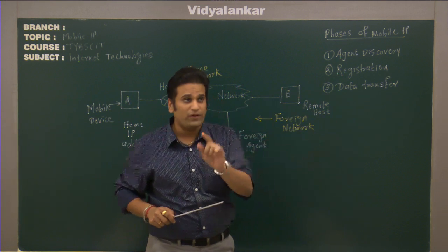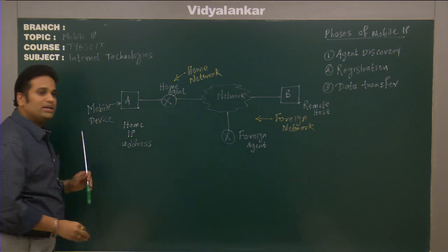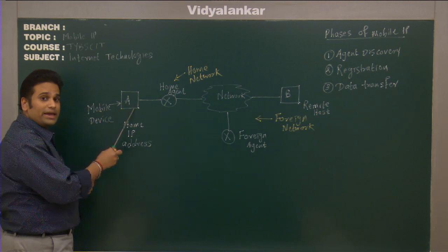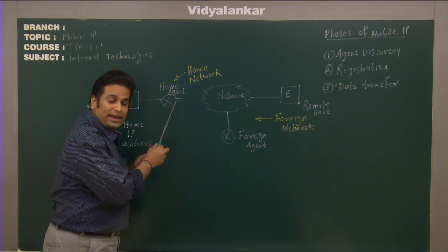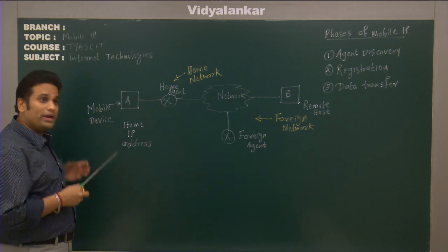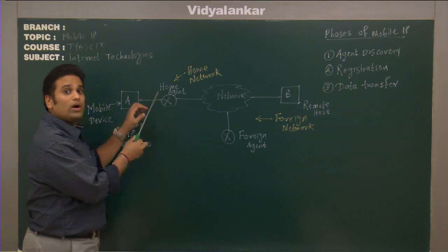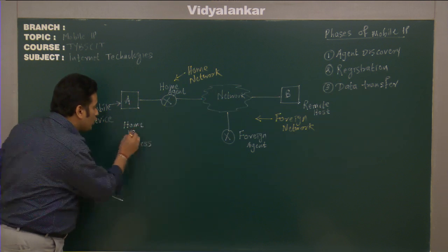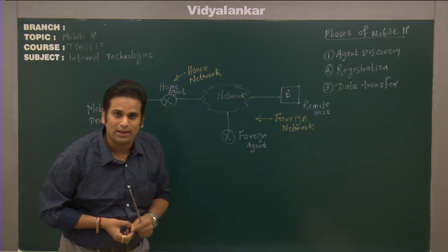The first phase is Agent Discovery. In agent discovery, this particular mobile device will request to its home agent. Initially it will try to identify which agent is its home agent and will request the home agent to assign a permanent IP — known as the home IP address — to this particular device.